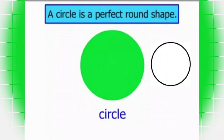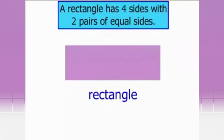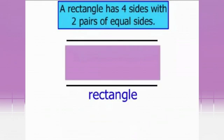Very good. Now what about this shape? This is a rectangle shape. A rectangle has 4 sides with 2 pairs of equal sides. 1, 2, 3 — 1, 2 sides are equal. Okay children.